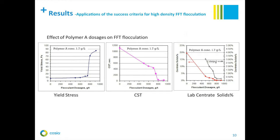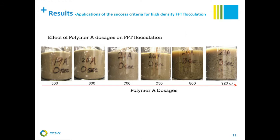So these three criteria clearly give you the tool to judge flocculant performance. The pictures also clearly show that when you increase dosage from 500 grams per ton to 800 grams per ton, the floc structures don't change much, but after 800 grams per ton you can clearly see floc particles forming and floc size increasing.